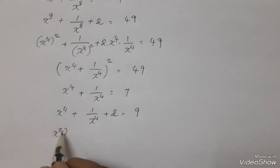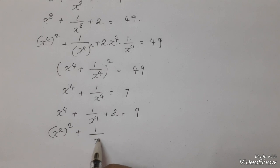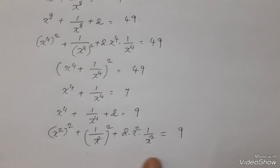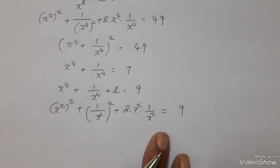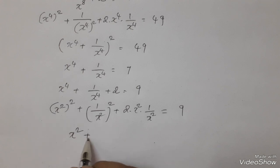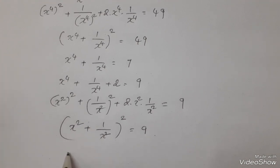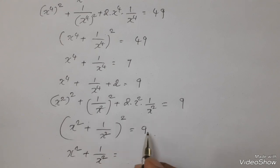Again write in perfect square form: x square whole square plus 1 by x square whole square plus 2 into x square into 1 by x square equal to 9. This gives x square plus 1 by x square whole square equal to 9. Taking square root on both sides, we get x square plus 1 by x square equal to square root of 9, which is 3.